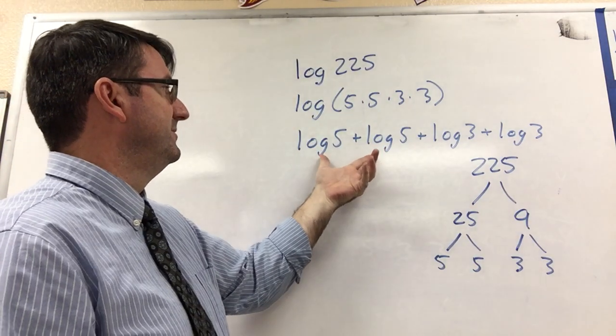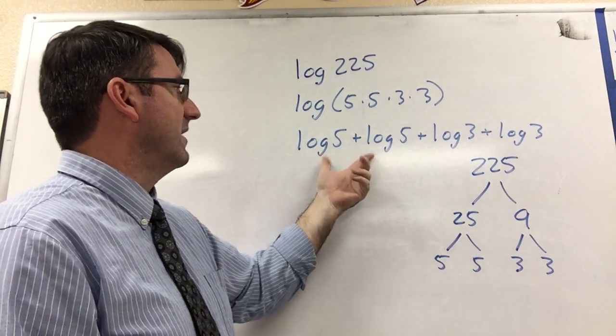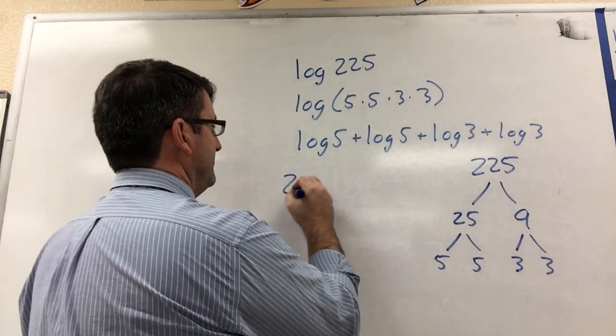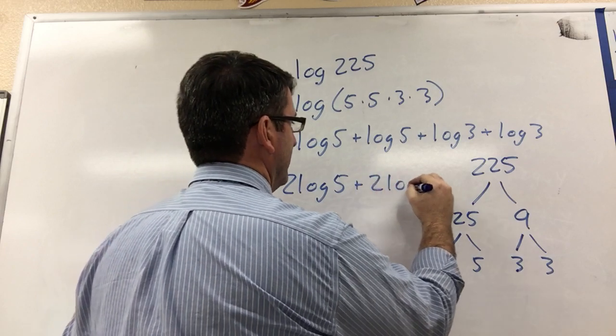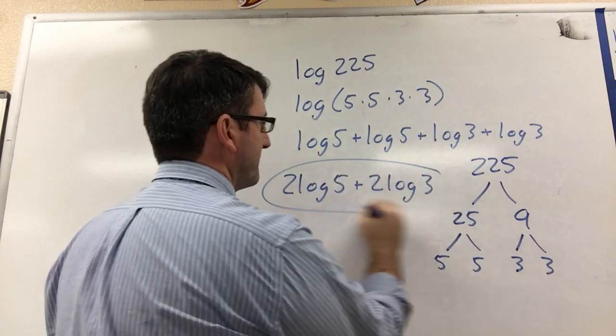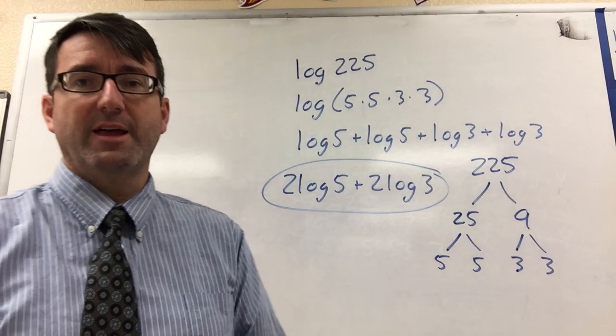like terms. We've got 2 log 5's and 2 log 3's, so this is 2 log 5 plus 2 log 3. And that's the answer.